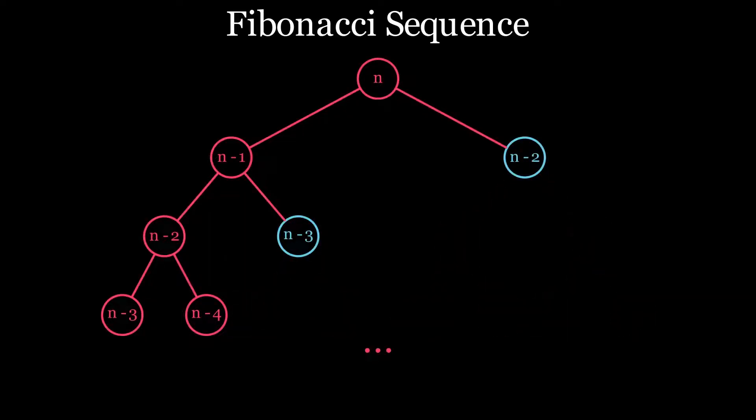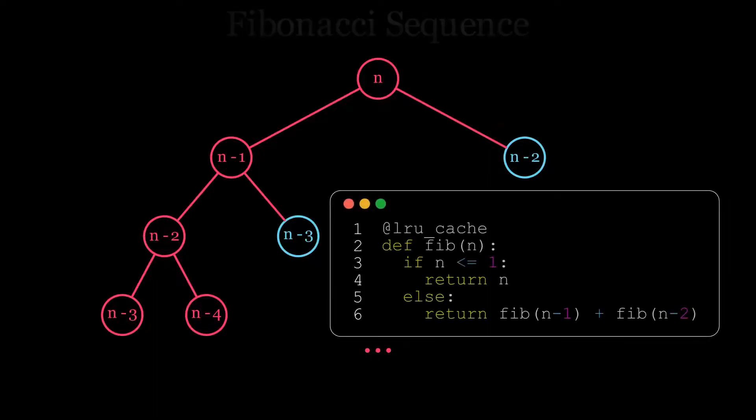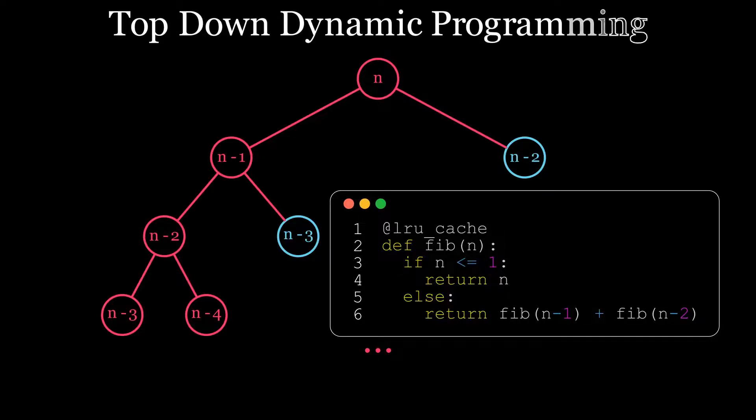Even with a small value for n, you can see that this has greatly reduced the effort required, and it's basically entirely removed that rightmost branch. In code, this might look something like this, using a caching decorator from Python. This method is called top-down dynamic programming, and you might sometimes see it called memoization. That's memoization rather than memorization, and it's a type of caching.